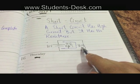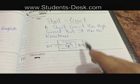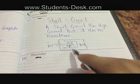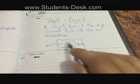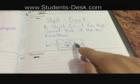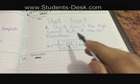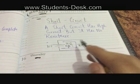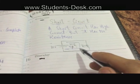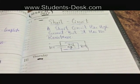A short circuit is basically when two points with different voltages come in contact through a very low impedance path, resulting in an uncontrolled flow of current through that path. That can be called a short circuit. Thank you very much for watching the video.